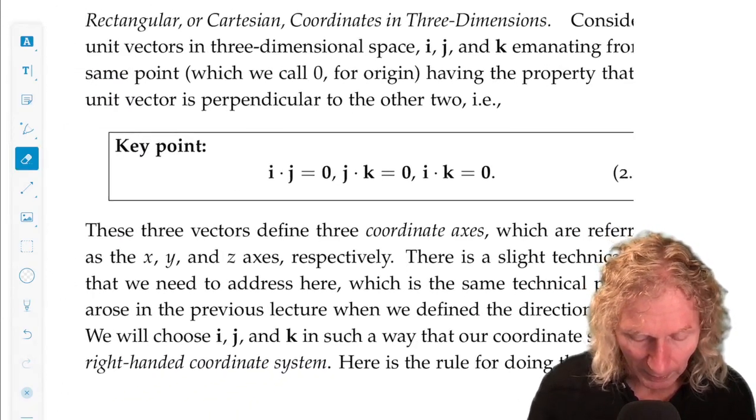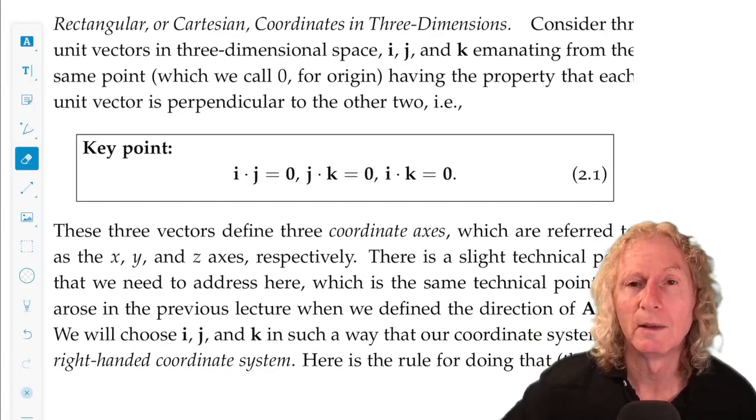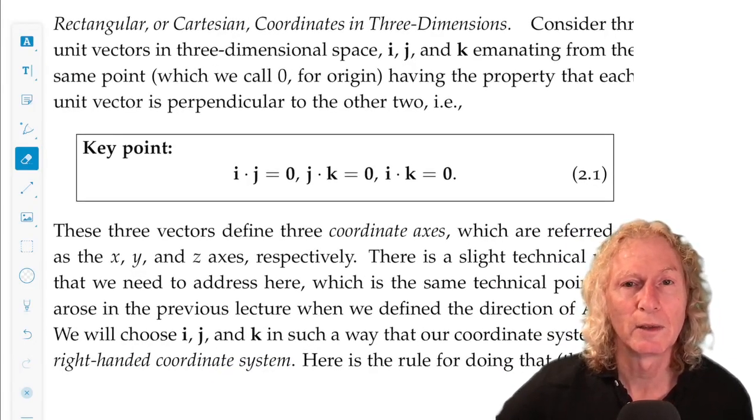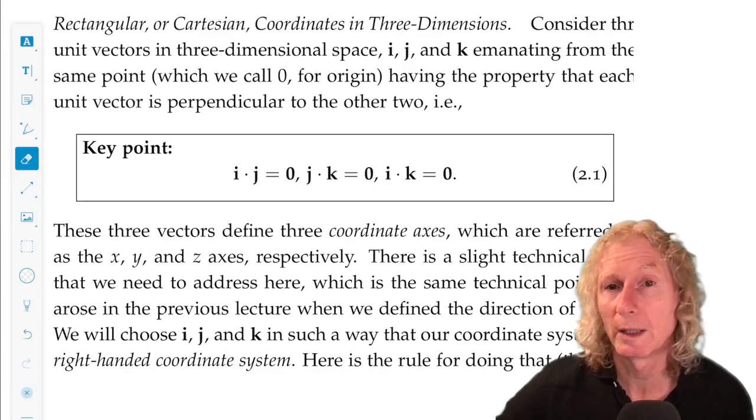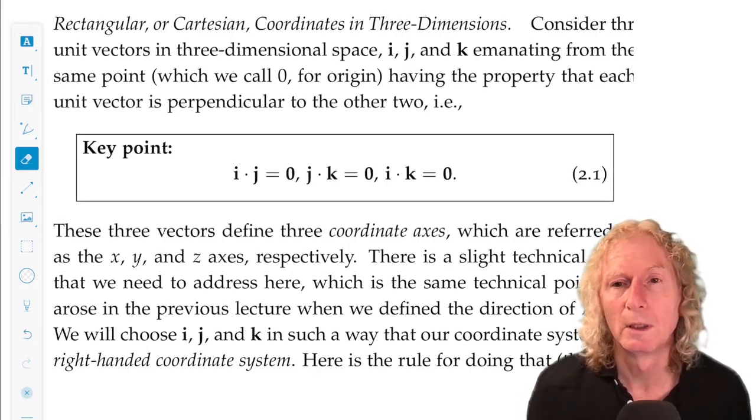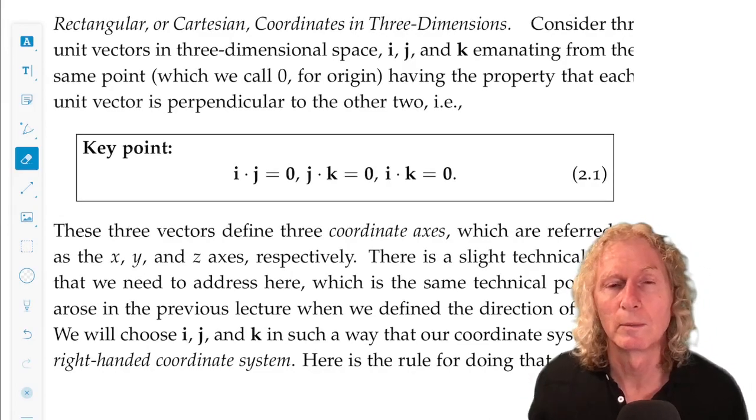And this is exactly what I mean by that in this key point. i dot j is zero, j dot k is zero, and i dot k is zero. And remember, dot products are commutative.